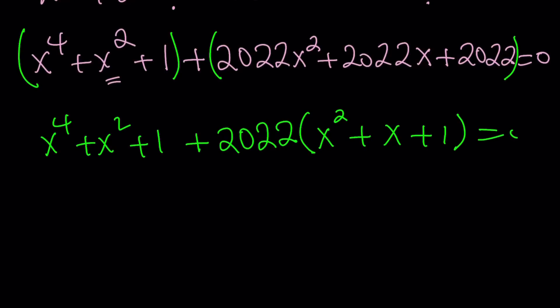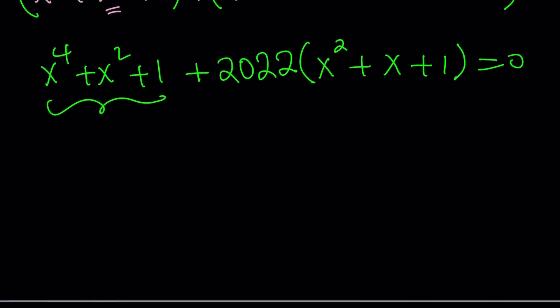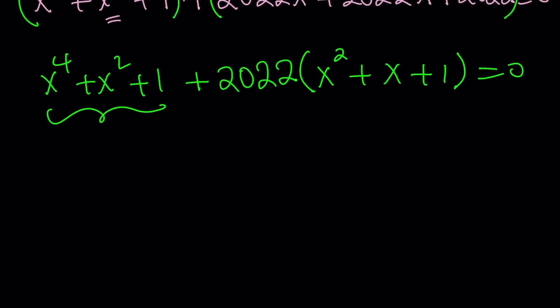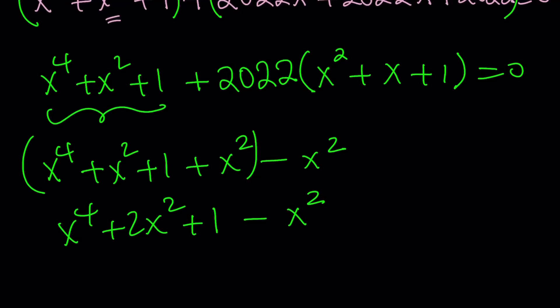Now, x squared plus x plus 1 should give you a clue about how to factor this piece here. This is an interesting quartic polynomial that can be factored by adding and subtracting. We're going to turn this into a difference of two squares. We're going to add x squared and subtract x squared. Why? Because this part becomes x to the 4th plus 2x squared plus 1, which is a perfect square, minus x squared, another perfect square.